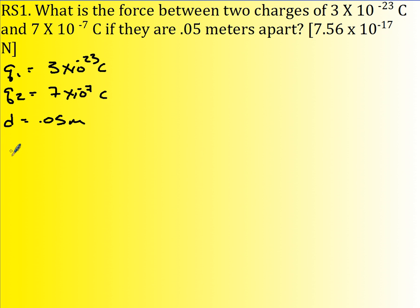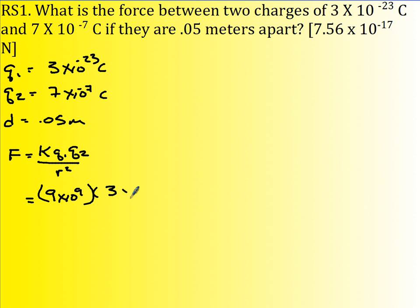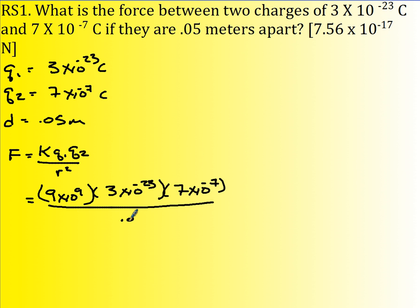I'm looking for the force. I know the force is k q1 q2 divided by r squared. So this is 9 times 10 to the 9th, times q1 which is 3 times 10 to the negative 23rd, times q2 which is 7 times 10 to the negative 7, divided by the distance 0.05 squared. Multiply your numerator through, divide by your denominator, and you get 7.56 times 10 to the negative 17 Newtons.